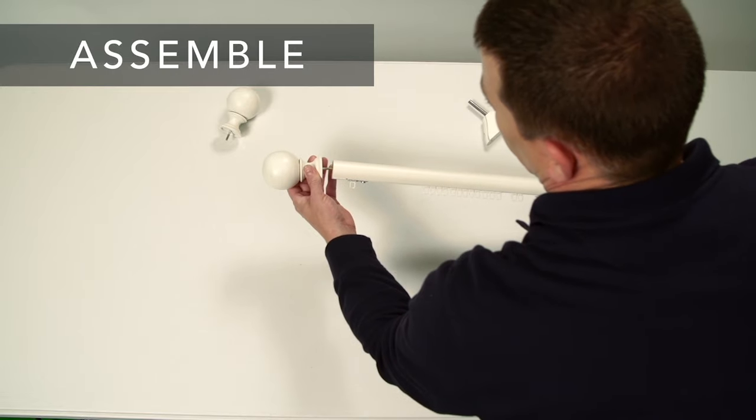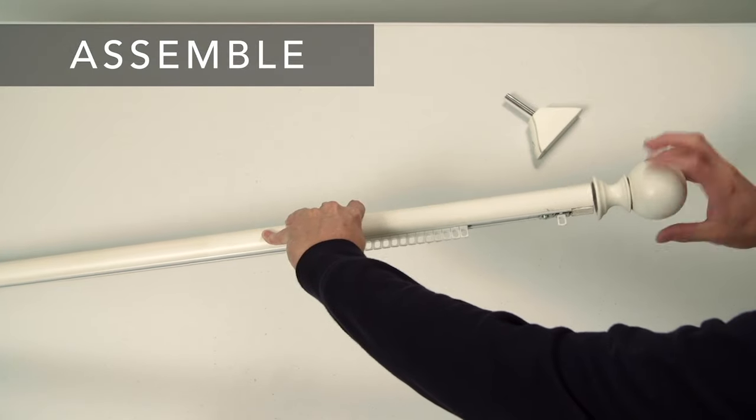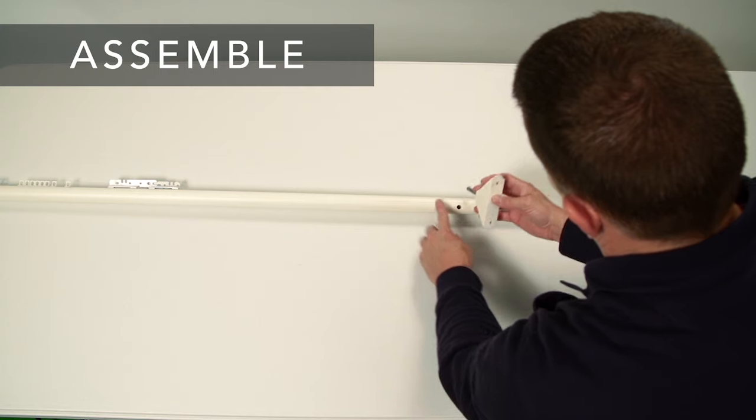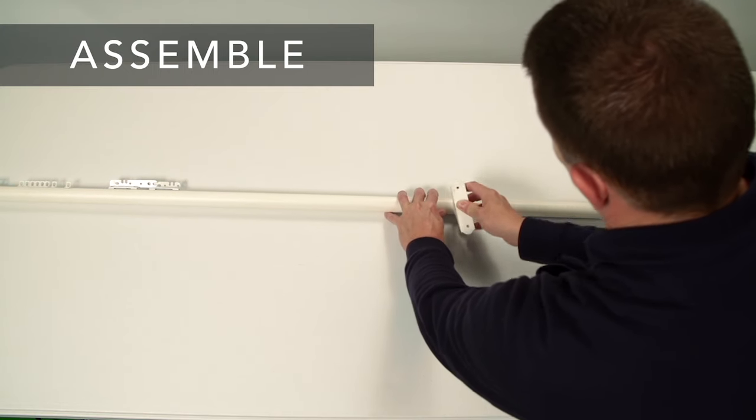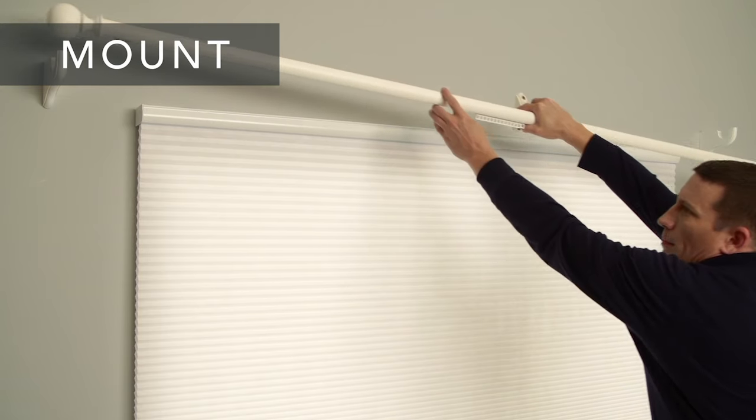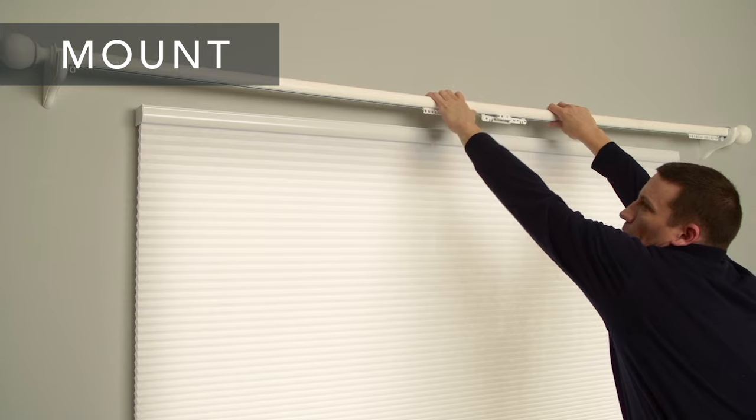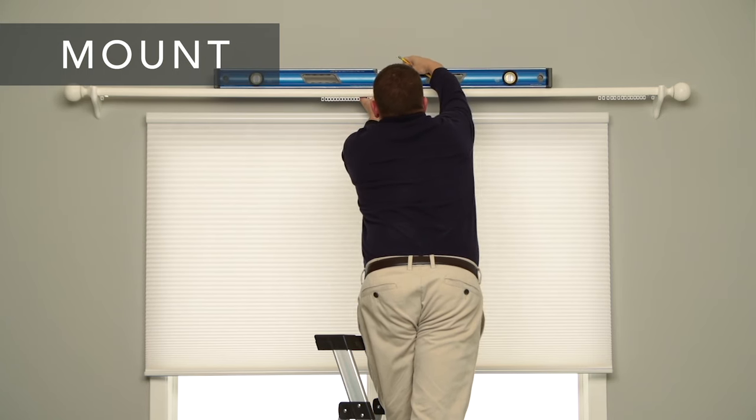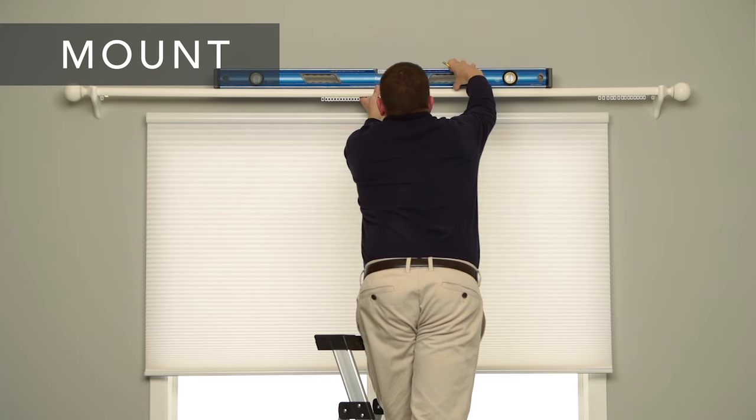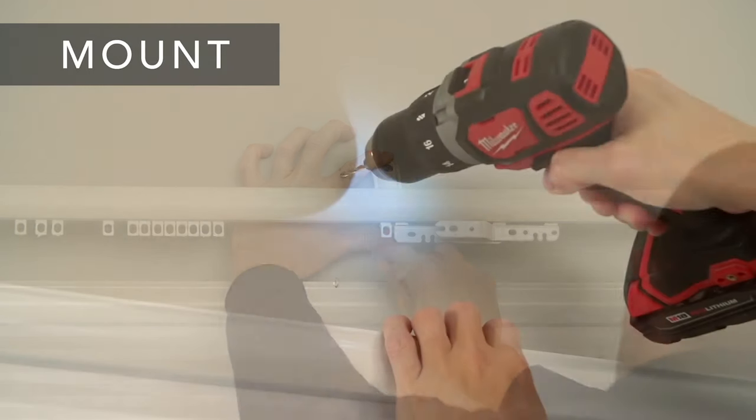Now, screw the finials into each end of the decorative traverse rod. If your decorative traverse rod came with support brackets, insert them into the rod. Now, place the decorative traverse rod onto the holders, making sure it's centered and that the supports are flush to the wall. Ensure the rod is level at each support bracket and screw the support securely into place.